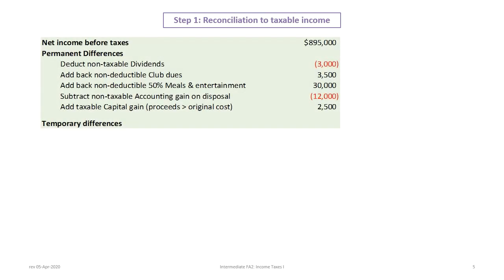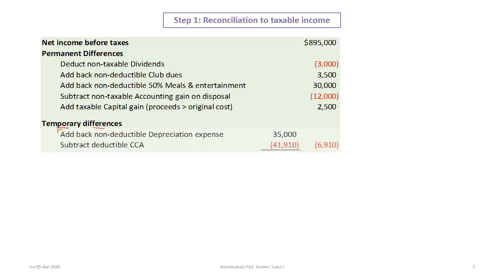Now we focus on the temporary differences section. Remember, temporary differences are situations where items are either taxable or tax deductible for income tax purposes, but over a different period of time than for accounting purposes. This question has five items to deal with. The first is depreciation and CCA — accounting depreciation is based on the company's accounting policy.